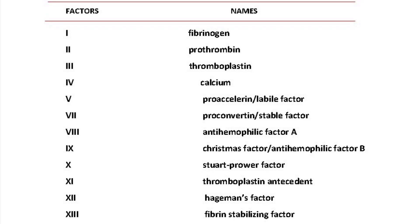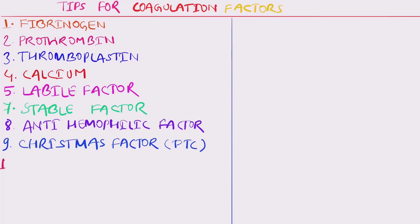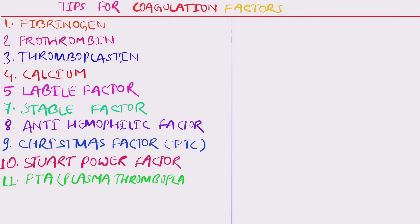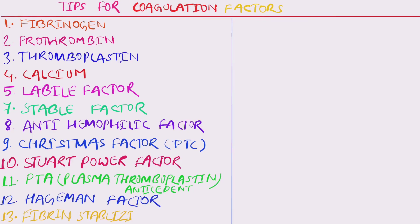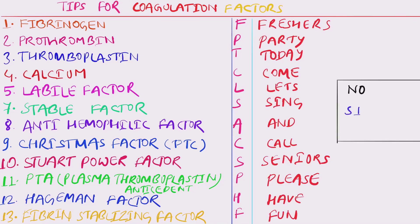You might have felt difficulty memorizing those 12 clotting factors with their names in series. So we have a simple trick for that — a simple mnemonic. The mnemonic goes: Fraser parties today. Come, let's sing and call seniors. Please have fun.